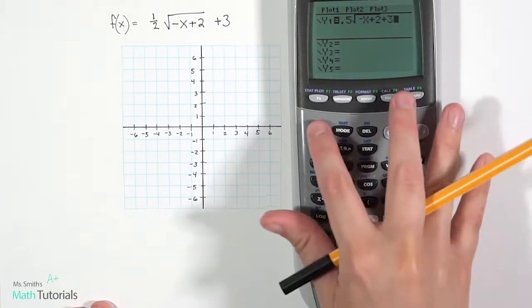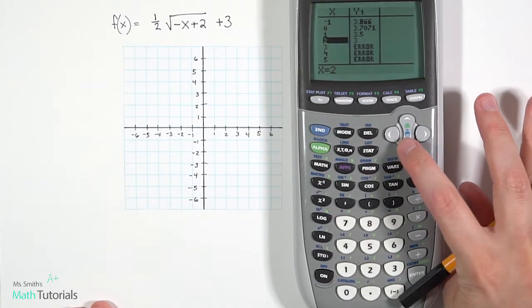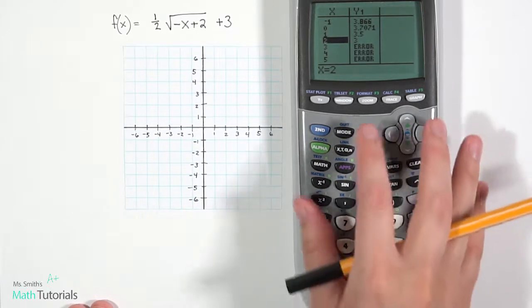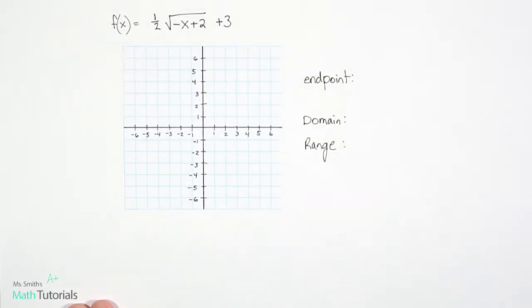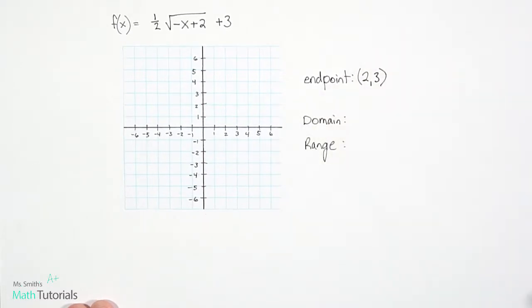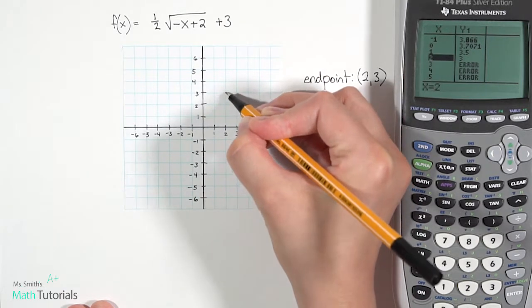So let's go to our table of values. And there's my errors that showed up. So my first point after the errors would be 2, 3. So I'm going to use that point as my endpoint. And we can go ahead and plot 2, 3. That would be right here.